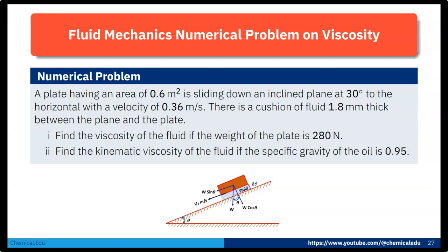Today I will solve one fluid mechanics numerical problem on viscosity. A plate having an area of 0.6 m² is sliding down an inclined plane at 30 degrees to the horizontal with a velocity of 0.36 m per second. There is a cushion of fluid 1.8 mm thick between the plate and the plane. Find the viscosity of the fluid if the weight of the plate is 280 N, and second, find the kinematic viscosity of the fluid if the specific gravity of the oil is 0.95.